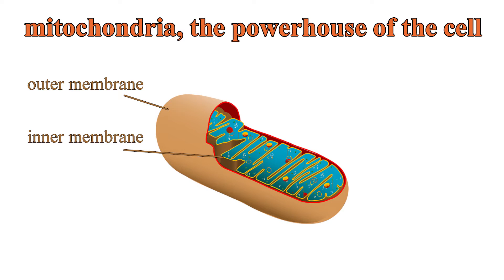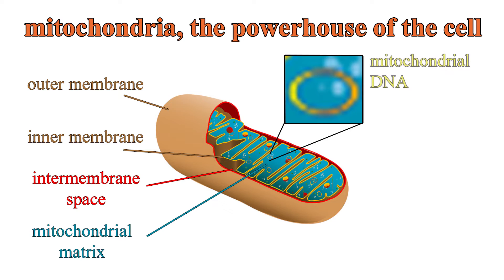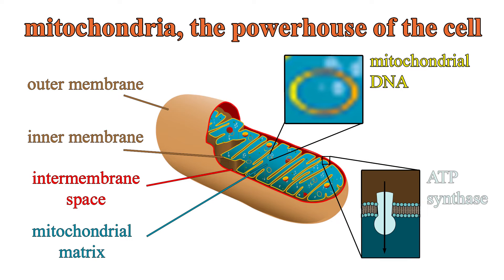These membranes divide the mitochondria into two compartments: the intermembrane space and the mitochondrial matrix. The matrix holds mitochondrial DNA, along with enzymes that catalyze some of the steps of cellular respiration. Other proteins, such as the enzyme that synthesizes ATP, are built into the inner membrane. As a highly folded membrane, it has a larger surface area which enhances its productivity.